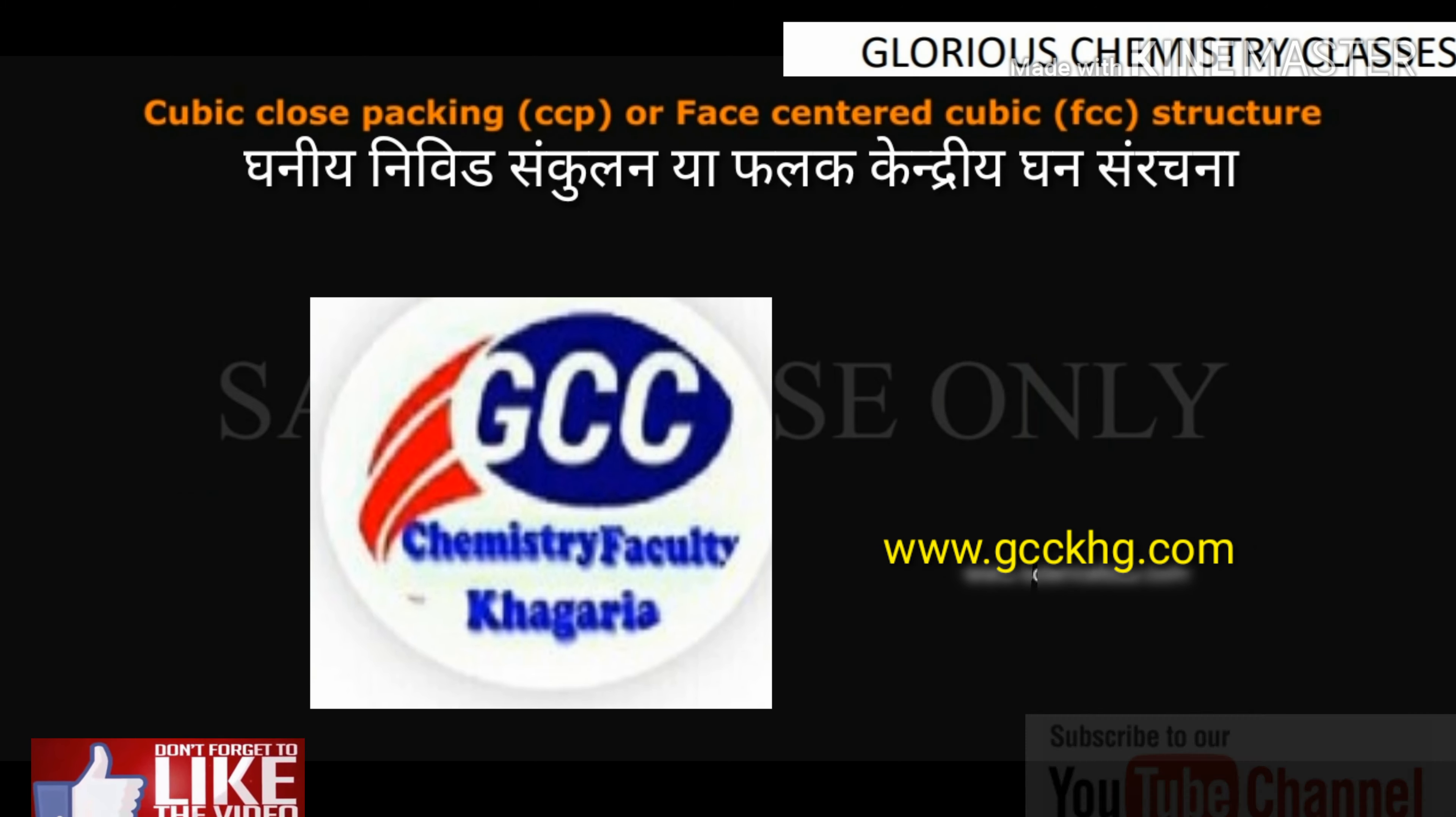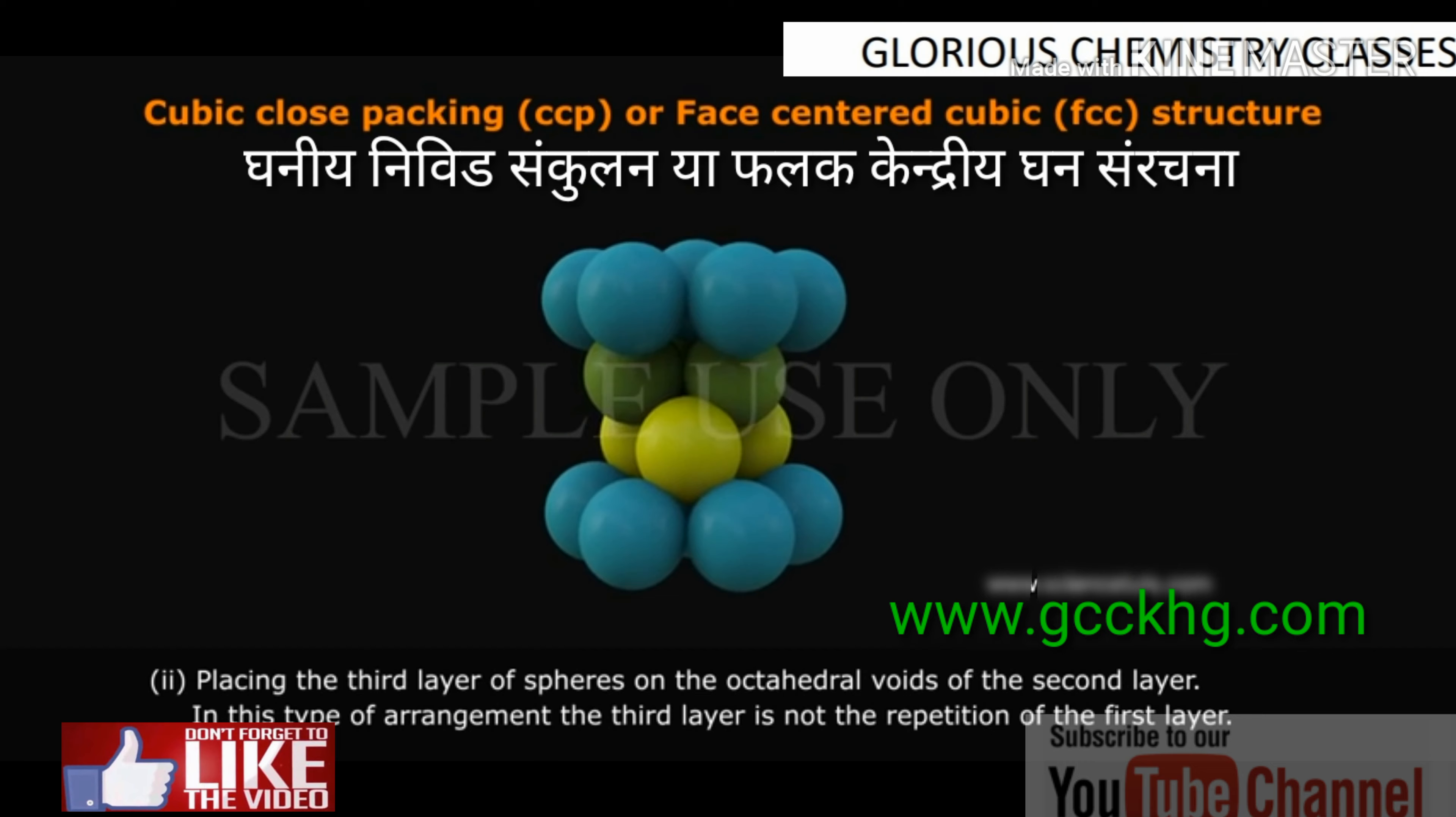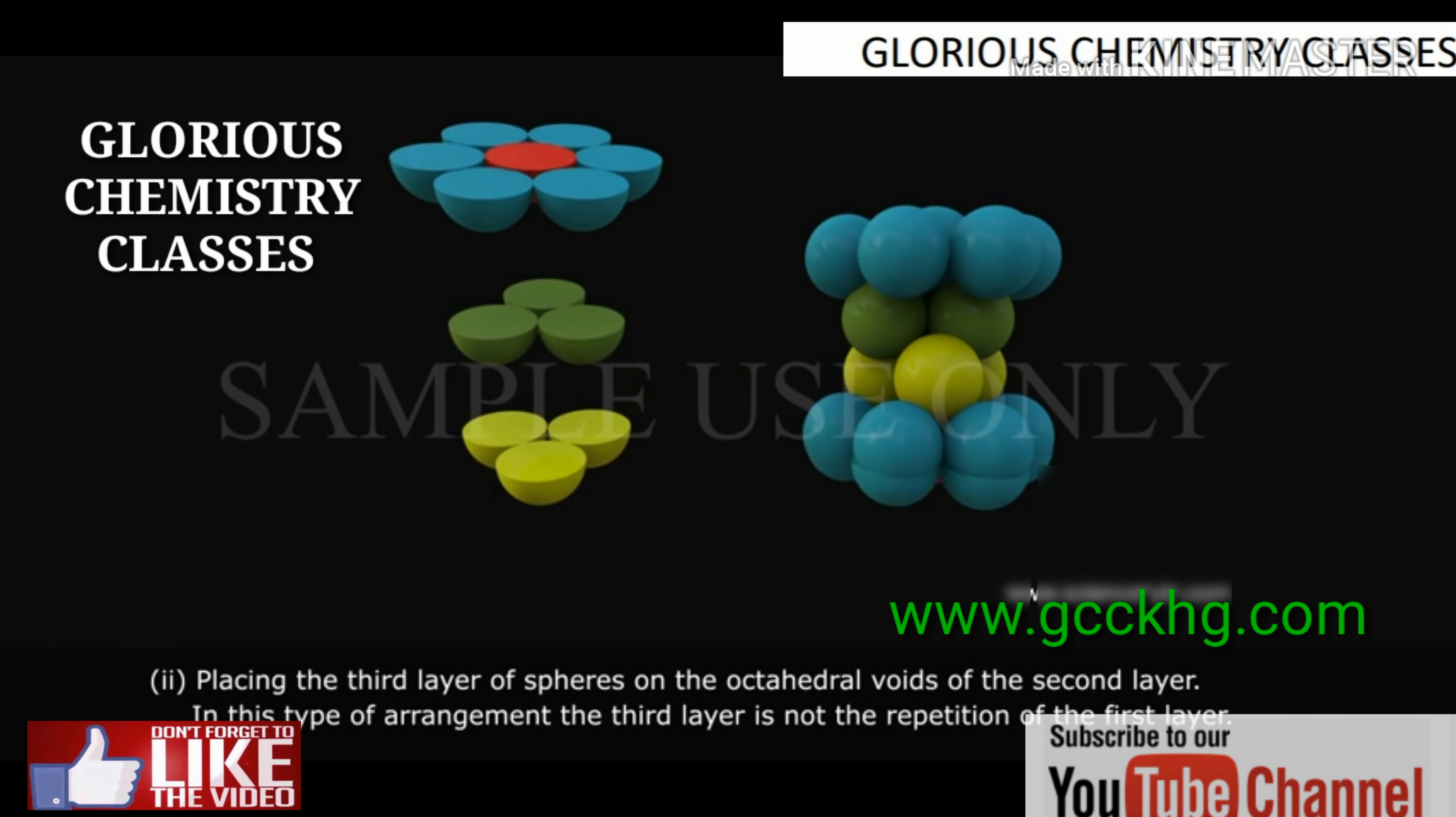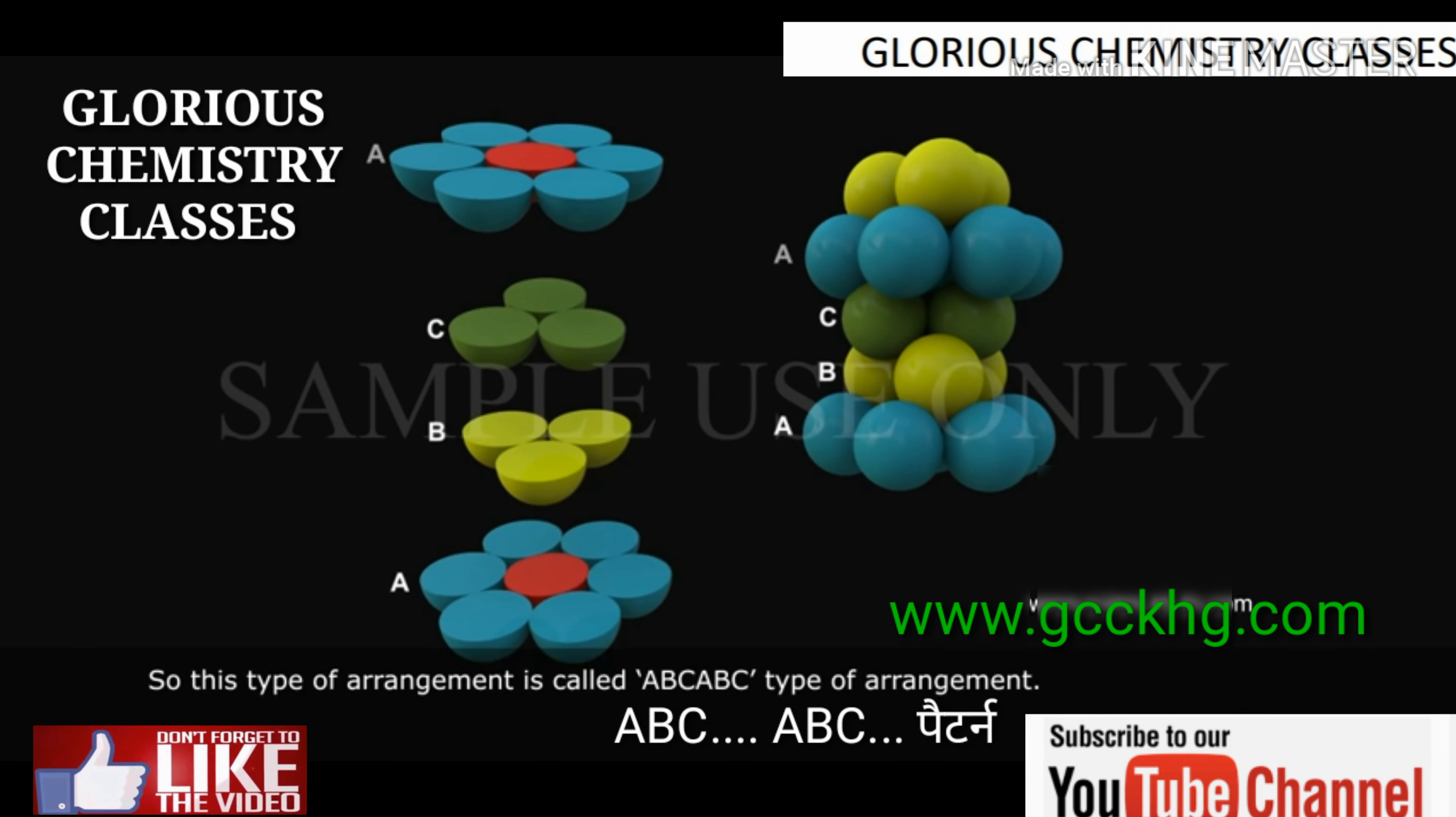Cubic close packing (CCP) or face-centered cubic (FCC) structure involves placing the third layer of spheres on the octahedral voids of the second layer. In this type of arrangement, the third layer is not the repetition of the first layer. So this type of arrangement is called ABC-ABC type of arrangement.